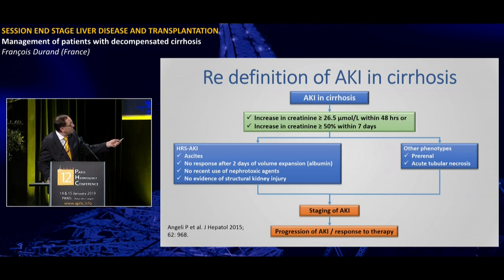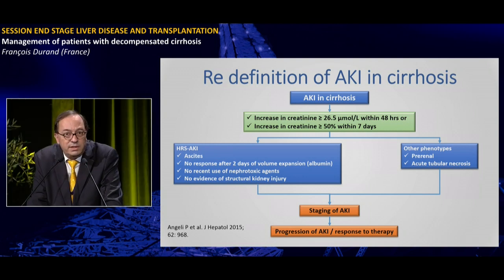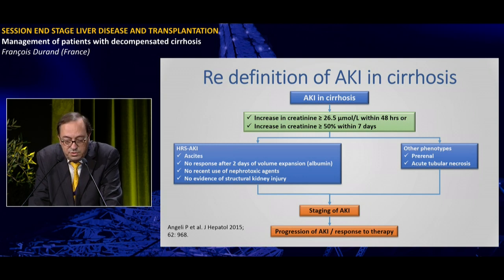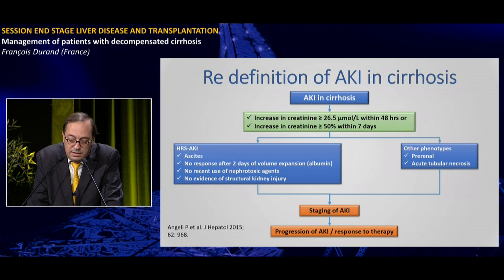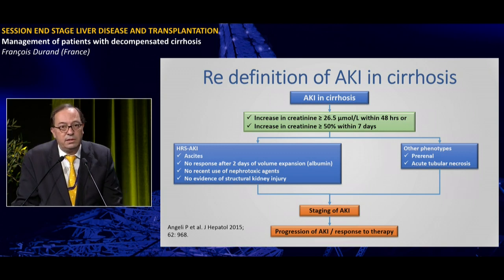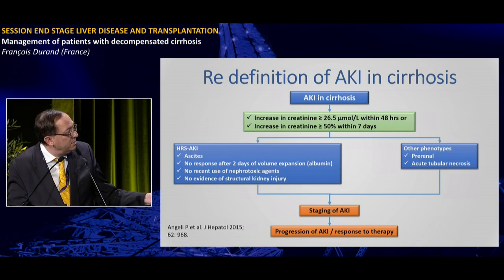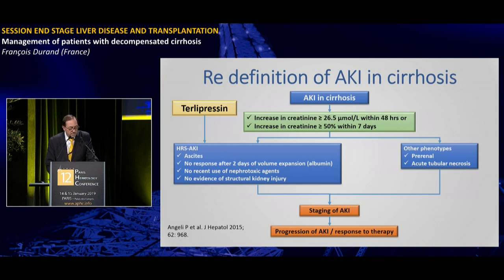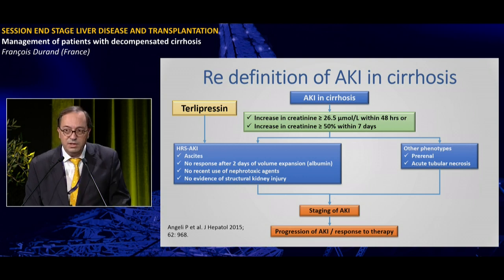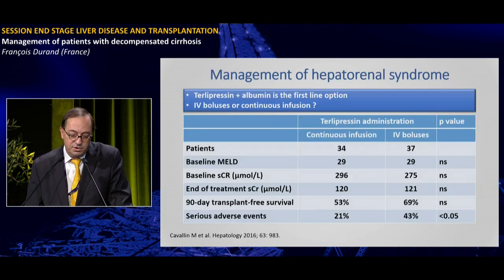Hepatorenal syndrome has been incorporated as one phenotype of AKI in cirrhosis, with criteria including: ascites, no response after two days of volume expansion with albumin, no recent nephrotoxic agent use, and no evidence of structural kidney injury. Other phenotypes include prerenal failure and acute tubular necrosis. Identifying patients with HRS-AKI early is important because they should receive terlipressin. The current criterion of two days of albumin expansion before starting terlipressin may delay therapy and should be reconsidered.